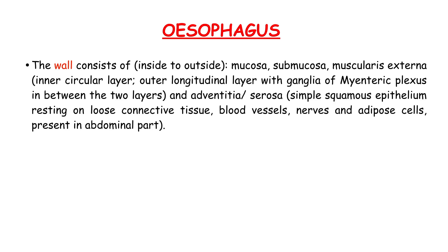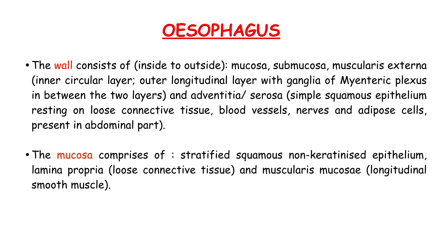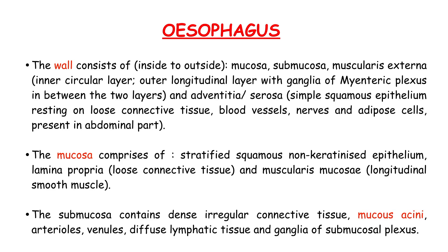The mucosa comprises stratified squamous non-keratinized epithelium, lamina propria (a loose connective tissue), and muscularis mucosae with longitudinal smooth muscle. The submucosa contains dense irregular connective tissue, mucous acini, arterioles, venules, diffuse lymphatic tissue, and ganglia of the mucosal plexus.